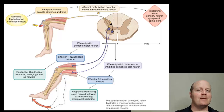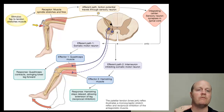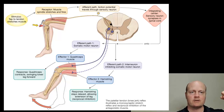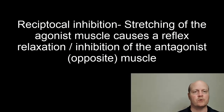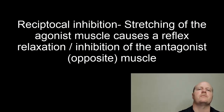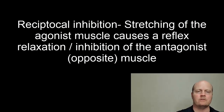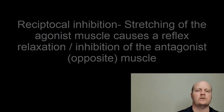At the same time we get an inhibition or a switch-off message going through a motor neuron to the opposite muscle. So if the quadriceps contracts, the hamstring relaxes. Reciprocal inhibition — if I do something and you do something back, that's reciprocating. So reciprocal inhibition is when the quads contract, the opposite muscle is inhibited or switched off.